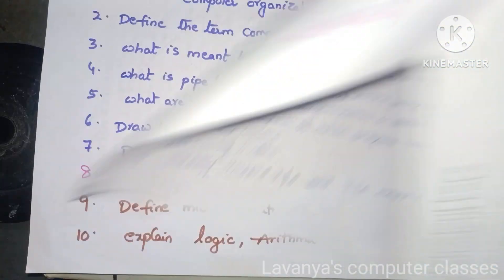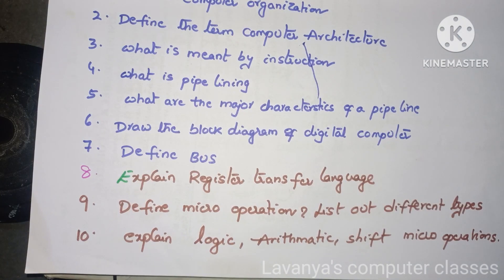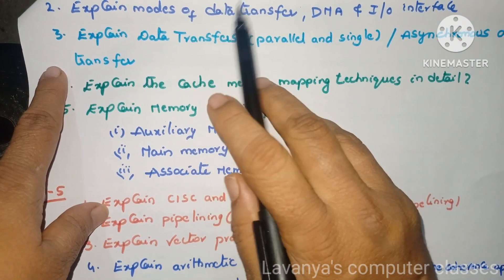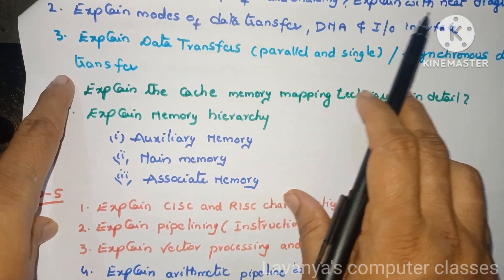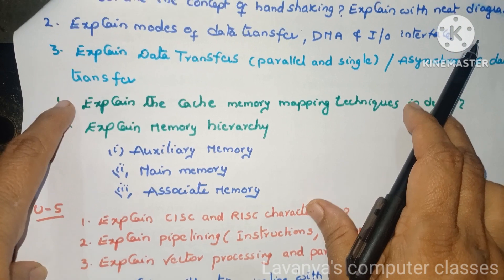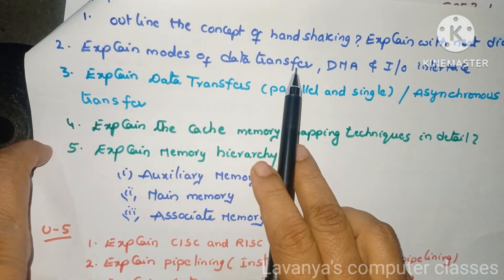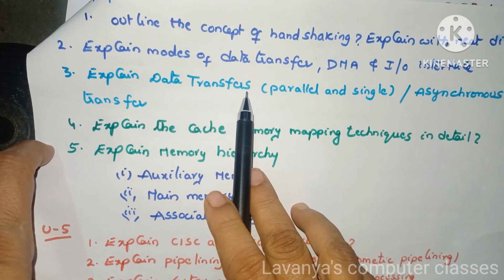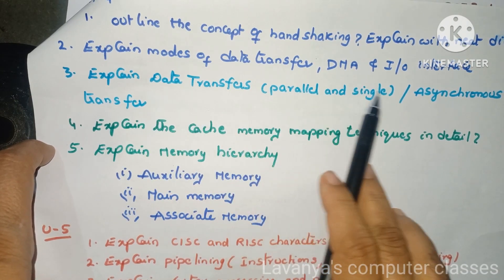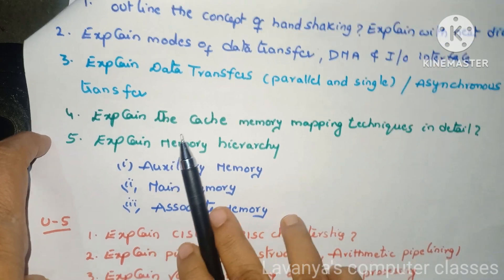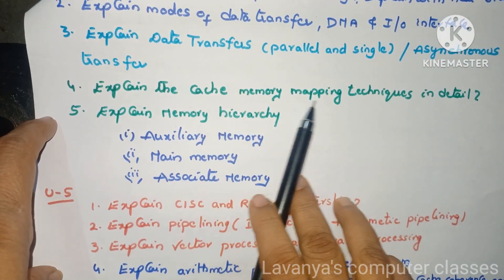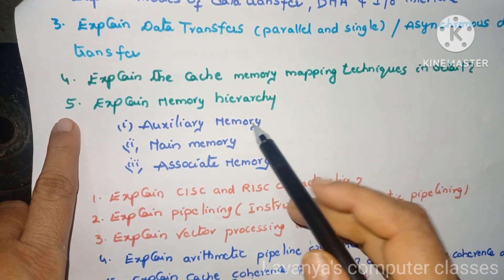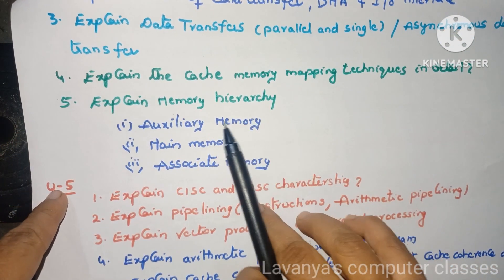Unit 4 questions: outline the concept of handshaking and explain with a neat diagram. Next one is: explain modes of data transfer — DMA and IO interface. Explain data transfers — parallel and serial, asynchronous data transfer. Explain the cache memory mapping techniques in detail. Explain the memory hierarchy — auxiliary memory, main memory, associative memory.